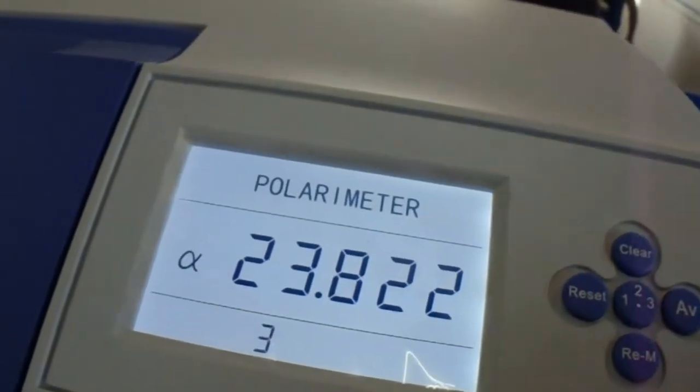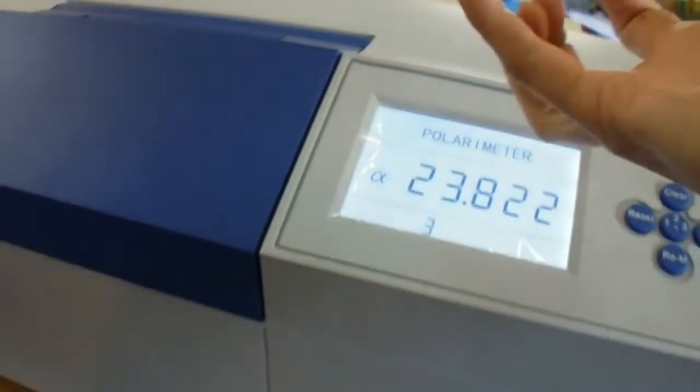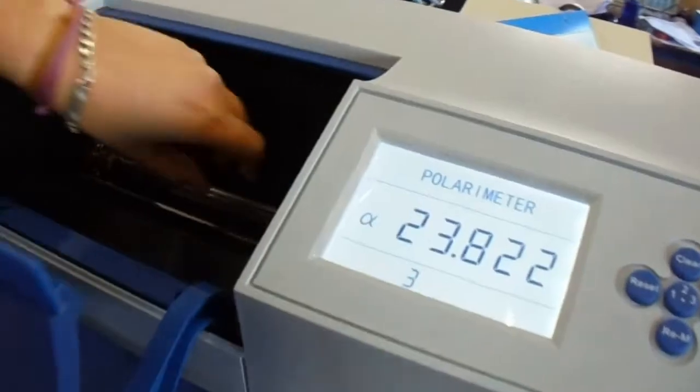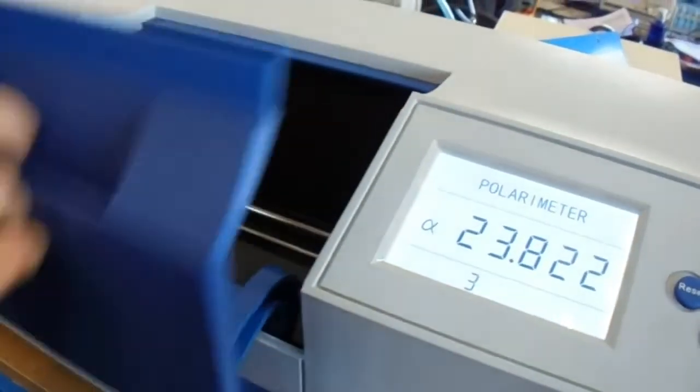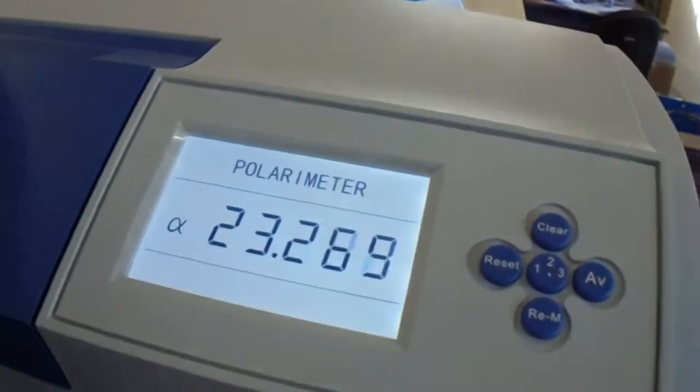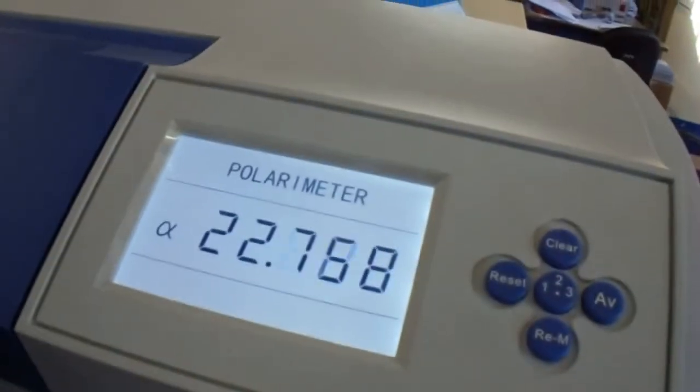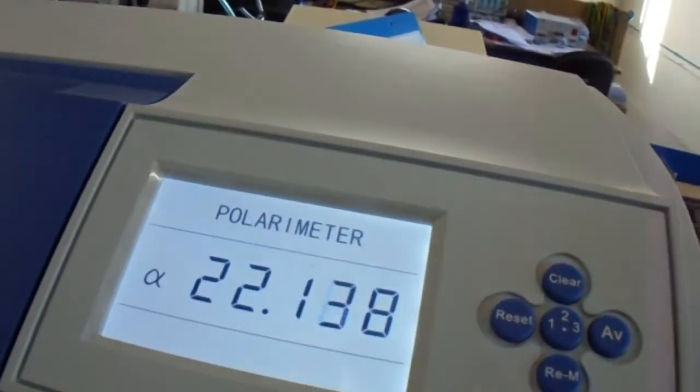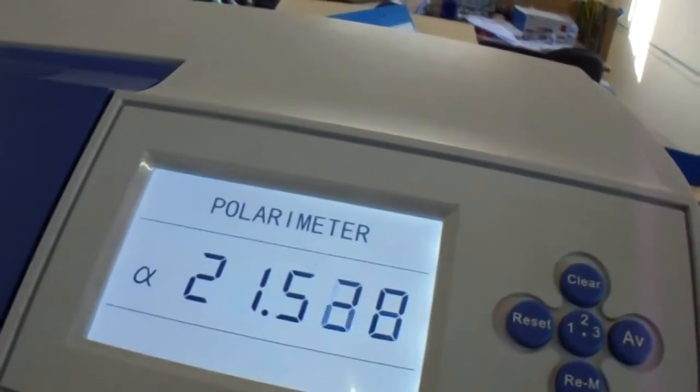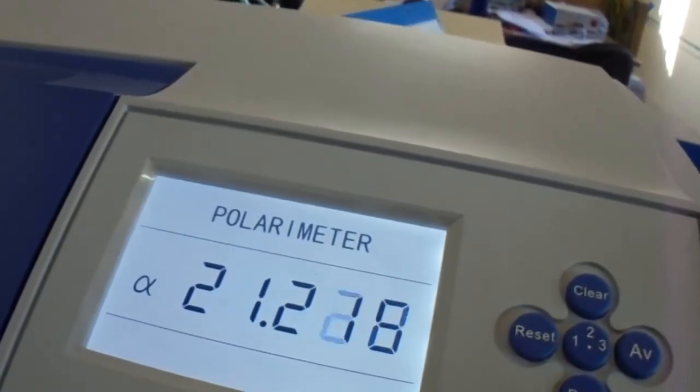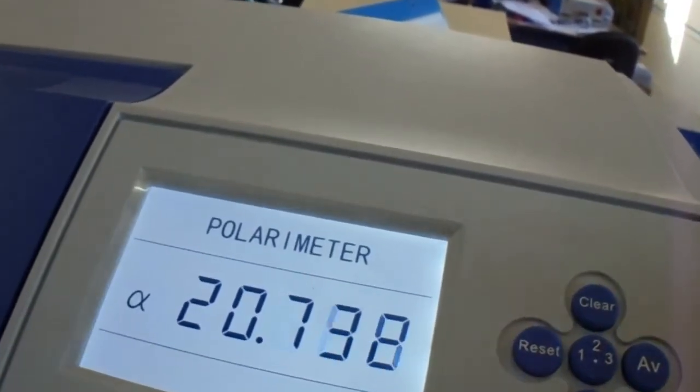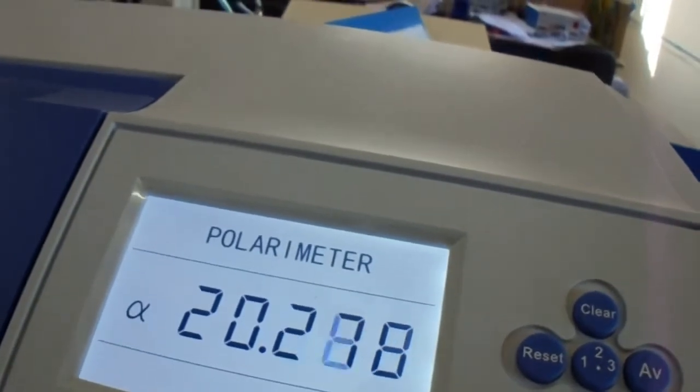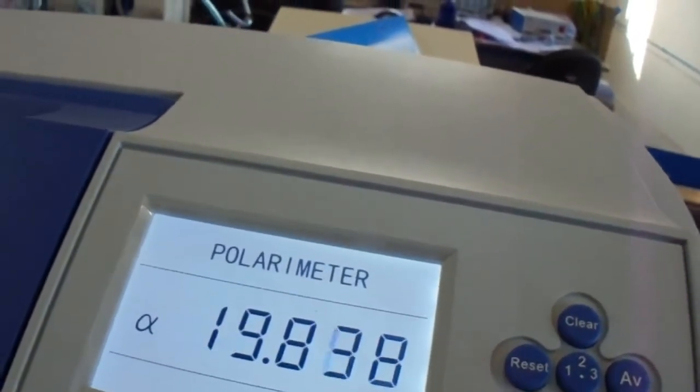Then you have to take out your sample and note the value that you have measured before. The polarimeter needs to go to zero again to get new measurements.